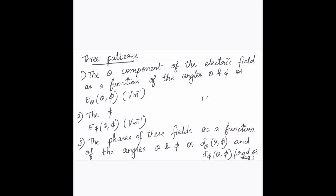There are basically three patterns when considering any antenna's radiation pattern. The first is the theta component of the electric field as a function of angles theta and phi, written as Eθ(θ,φ) in volts per meter. The second is the phi component of the electric field as a function of theta and phi, written as Eφ(θ,φ) in volts per meter. Third are the phases of the electric field components as a function of theta and phi, denoted as δθ or δφ, with units of radians or degrees.